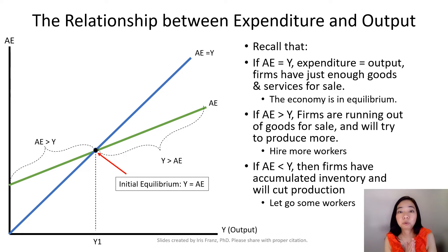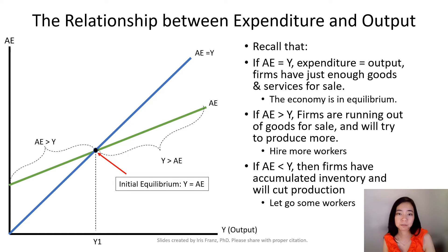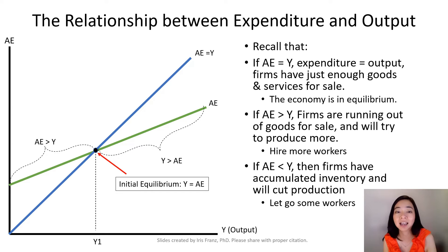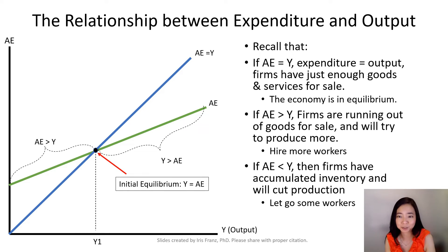Now on the right-hand side of the 45-degree line on this aggregate expenditure schedule, you can see the output is greater than the aggregate expenditure, meaning firms have accumulated inventories they are not able to sell. So at this point, firms will try to cut the production by letting go some of their workers.